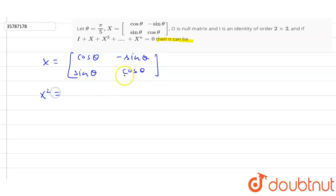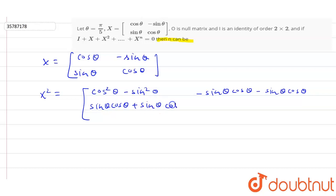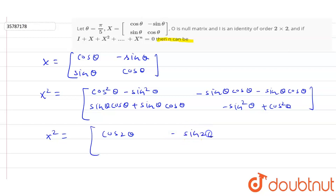If we compute x squared, we do matrix multiplication. First row with first column gives cos squared theta minus sin squared theta. First row with second column gives minus sin theta cos theta minus sin theta cos theta. Second row with first column gives sin theta cos theta plus sin theta cos theta. Second row with second column gives minus sin squared theta plus cos squared theta. So x squared equals [cos 2theta, minus sin 2theta; sin 2theta, cos 2theta].